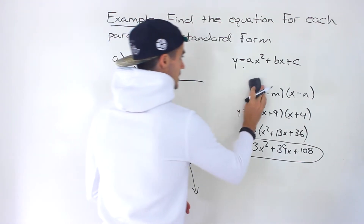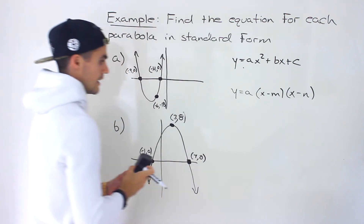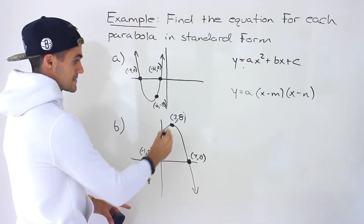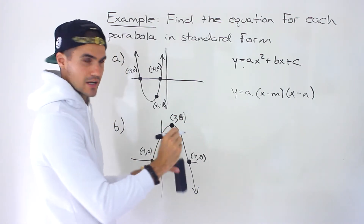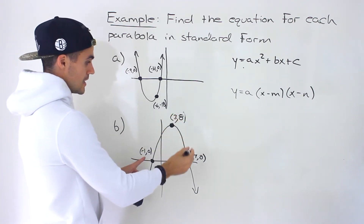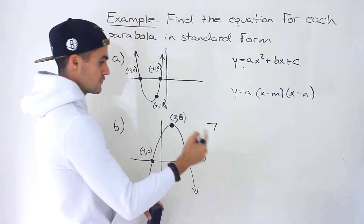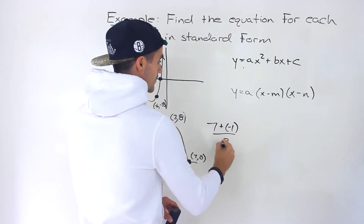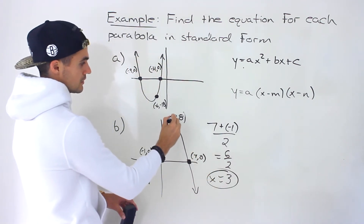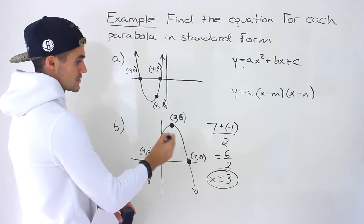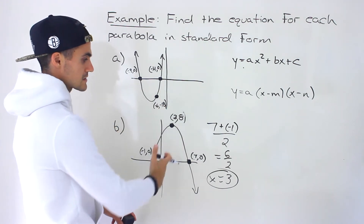Now moving on to part b. We're given both the intercepts and the vertex. We can verify it's the vertex because the two intercepts are 7 and negative 1. Adding them and dividing by 2 gives 6 over 2, which is an x value of 3. That point has an x value of 3, which is the midpoint between 7 and negative 1 — the axis of symmetry. So we've confirmed that is indeed the vertex.